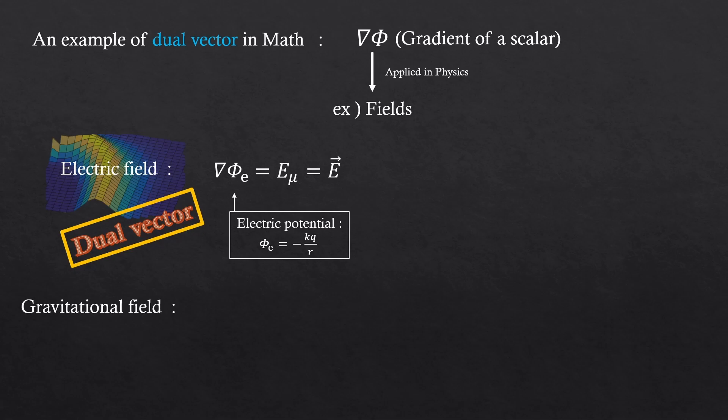How about gravitational field? We should know a gravitational potential first, is negative GM over r. We already learned this from high school. So, if there exists a scalar potential, one can always take the gradient of a scalar. And that will be the dual vector.